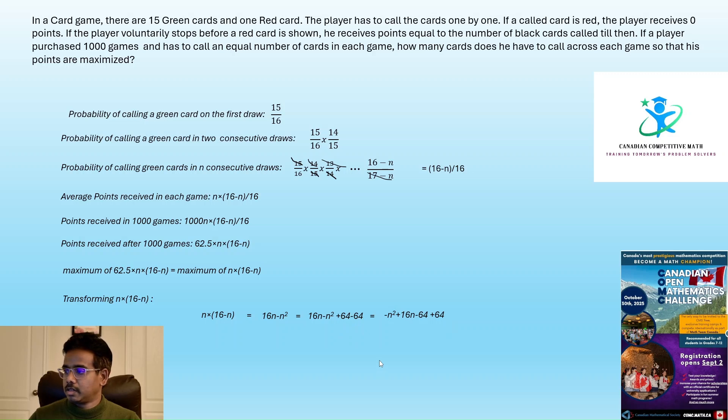So minus n square plus 16n minus 64 plus 64, we swap places here. That will be if I take minus 1 common here, it will be minus times n square minus 16n plus 64. The inside term we can write it as n square minus 2 times 8 times n plus 8 square. This whole expression we can write it as minus of n minus 8 whole square plus 64, which we can write it as 64 minus n minus 8 whole square.